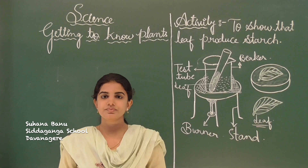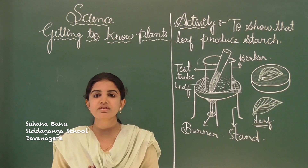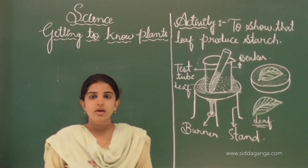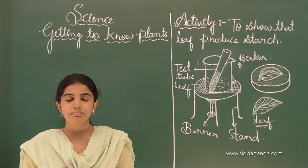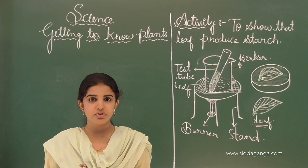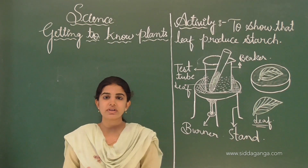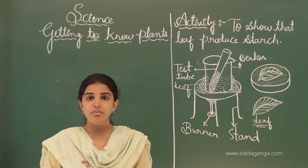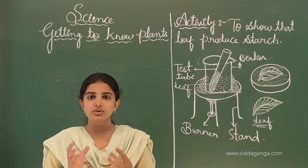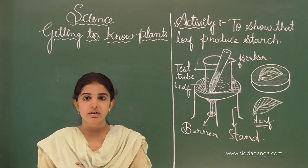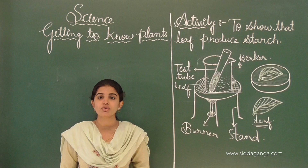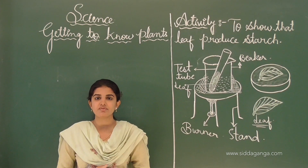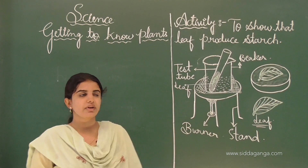Hello my dear students. We have been discussing about the chapter 'Getting to Know Plants' and we have studied in the previous class about different types of plants. Plants can be broadly classified into different varieties where some of them are flowering in nature. Those plants which bear flowers are called flowering plants and those which do not bear any kinds of flowers are called non-flowering plants.